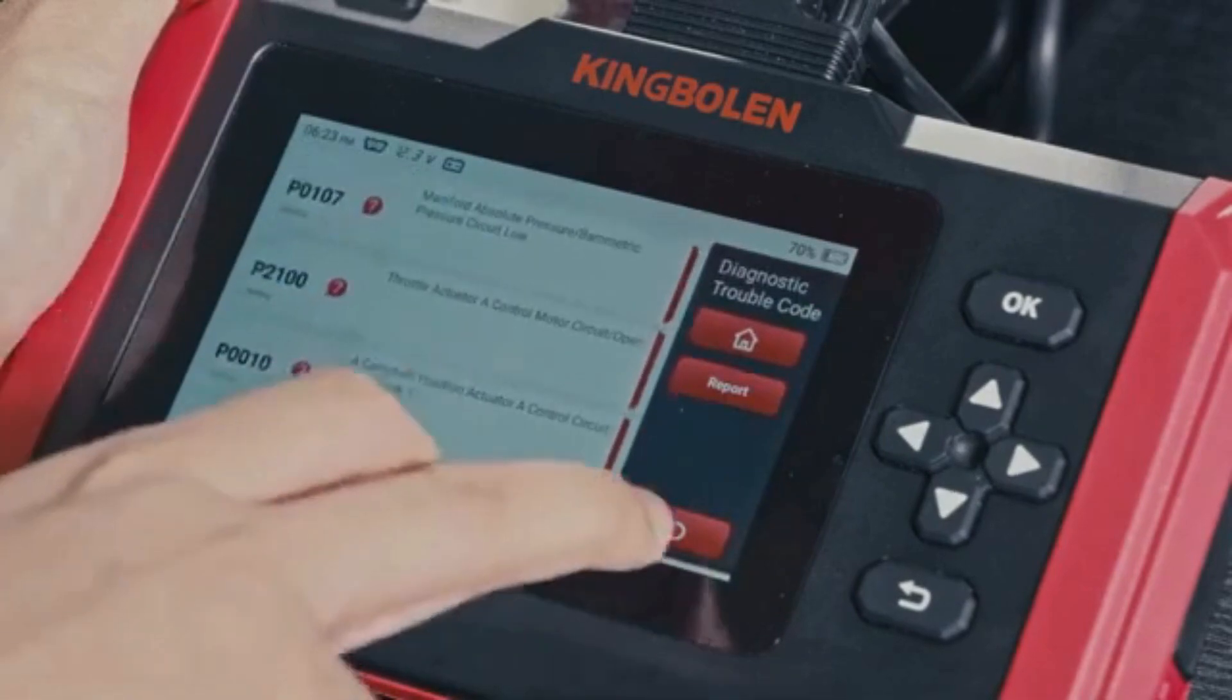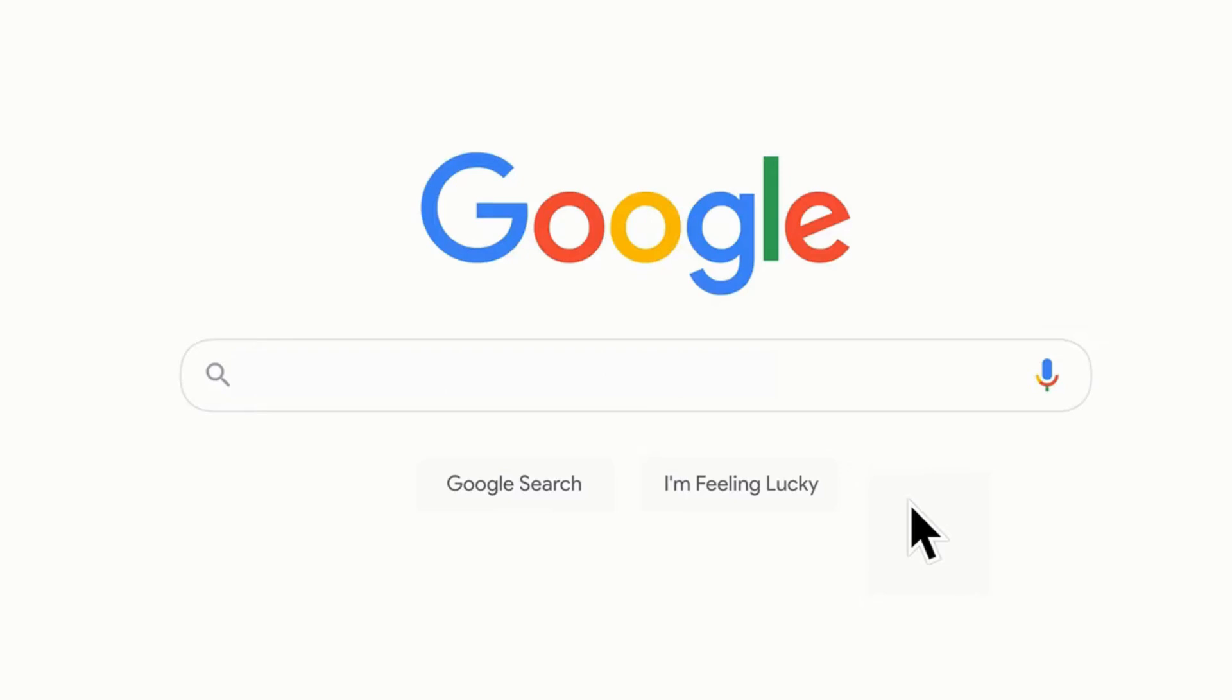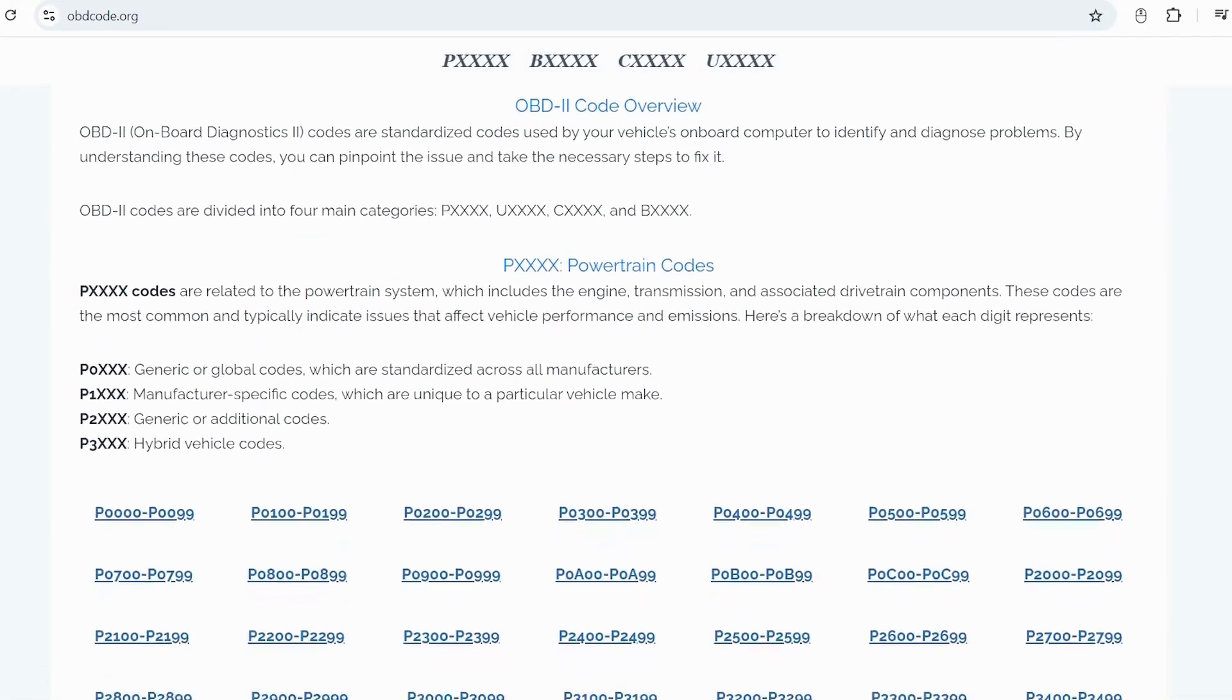If you want to read more about any other OBD-2 codes, you can visit our website obdcode.org for a full list of codes and their meanings.